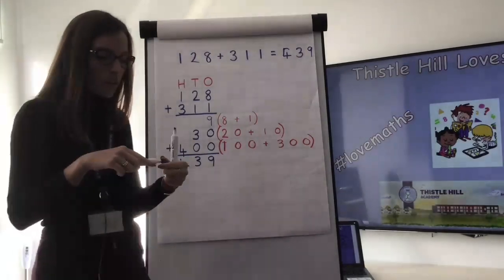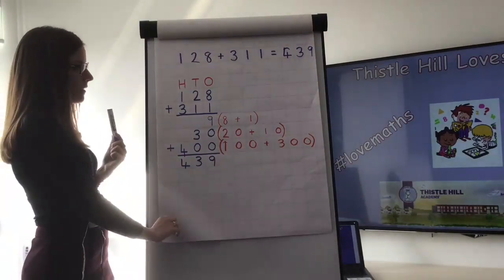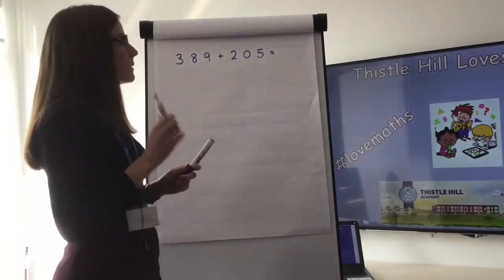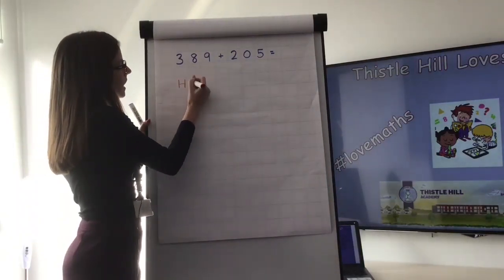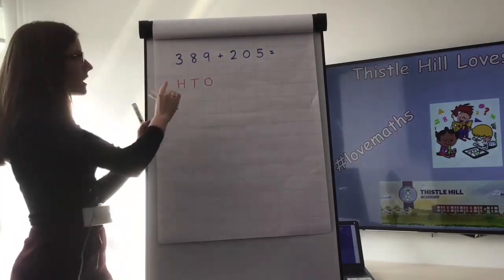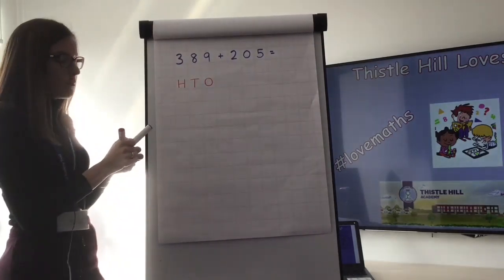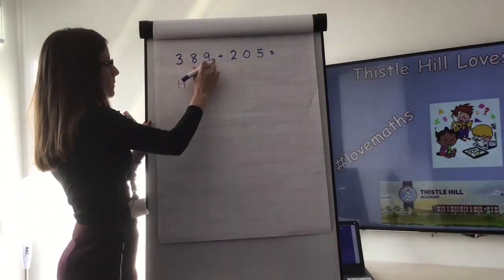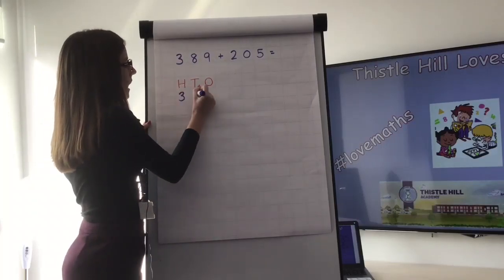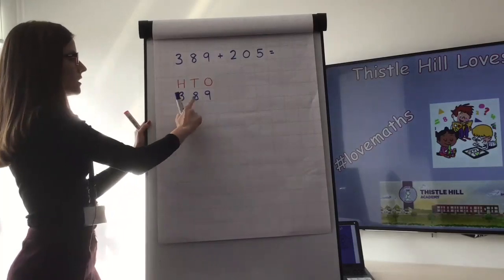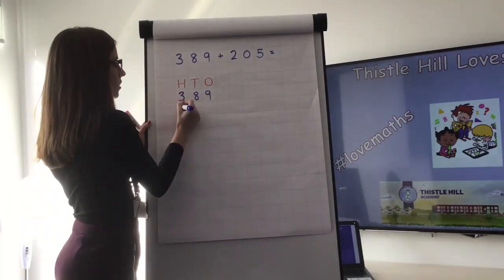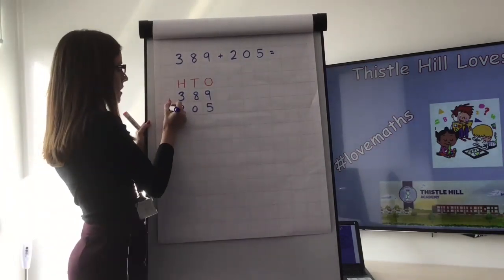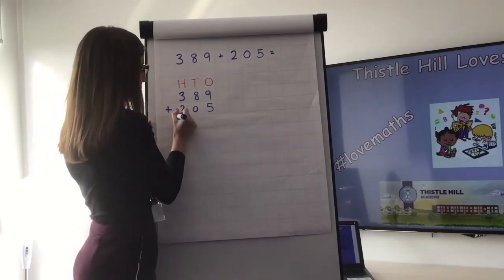Now we're going to look at a calculation where we might have to carry. We'll use exactly the same method but with a different calculation. Going back to the first step, I write my hundreds, tens, and ones, then place my first number 389. I'm adding 205, so I place the addition symbol and draw a line underneath.